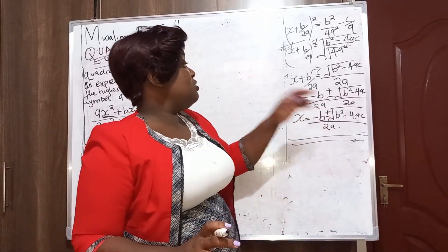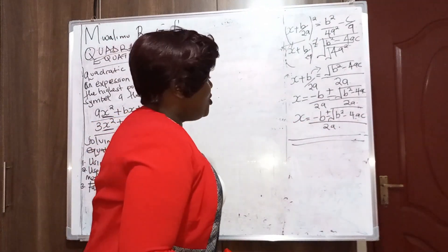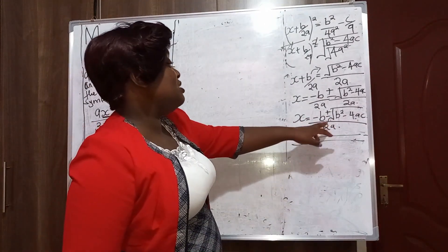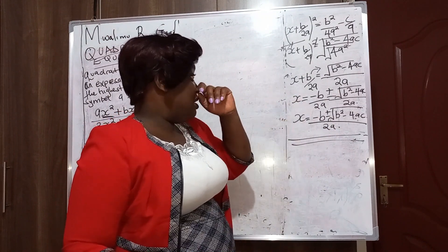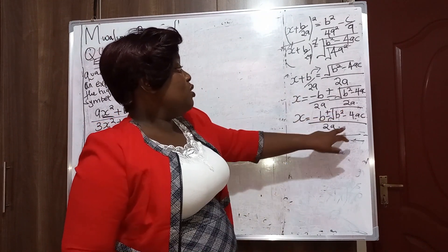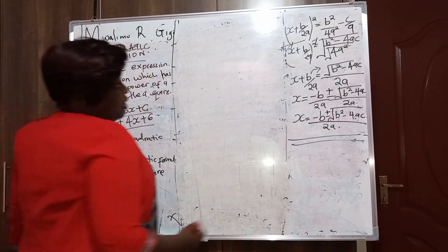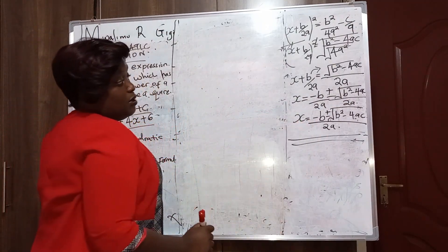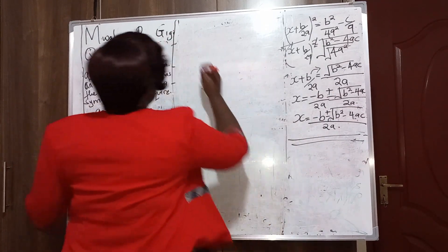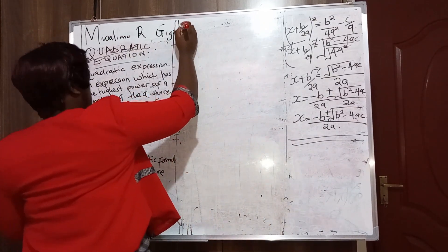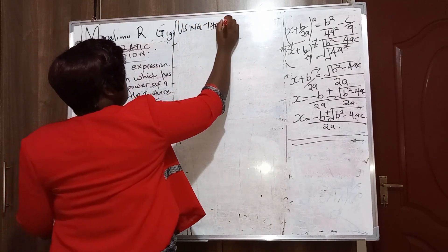We used an LCM to get one denominator. The LCM is 2a — 2a goes into 2a one time, and 2 goes into 2a once as well, so the expression remains the same.